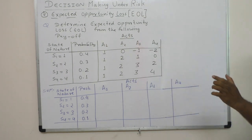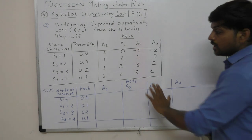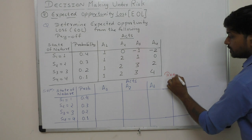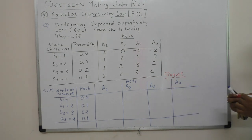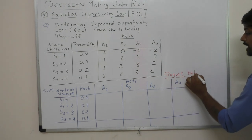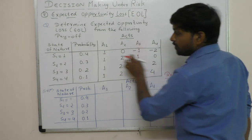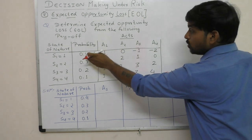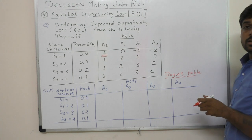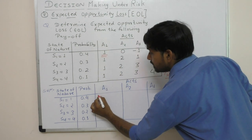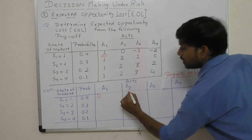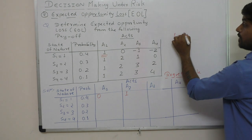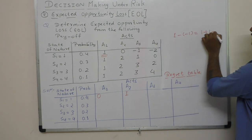We will call this the regret table. In this regret table, the highest payoff for the first state of nature is 1. So 1 minus 1 gives 0, and 1 minus 0 gives 1. Then 1 minus minus 1 equals 1 plus 1, which is 2. For the second state of nature, the highest payoff is 2.